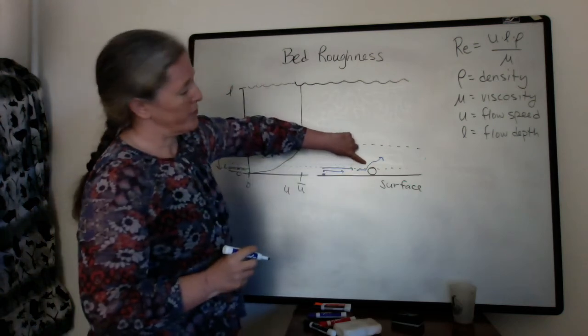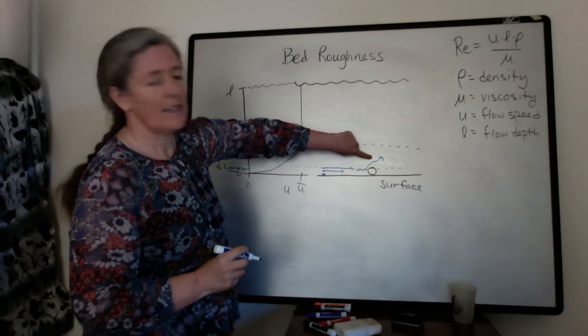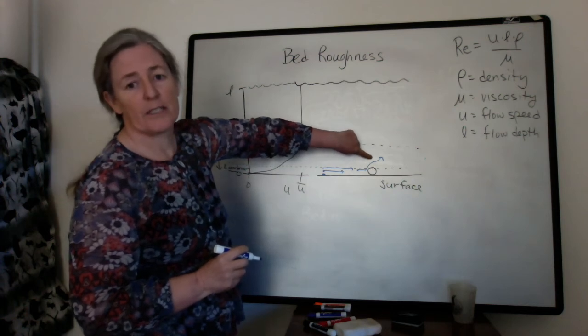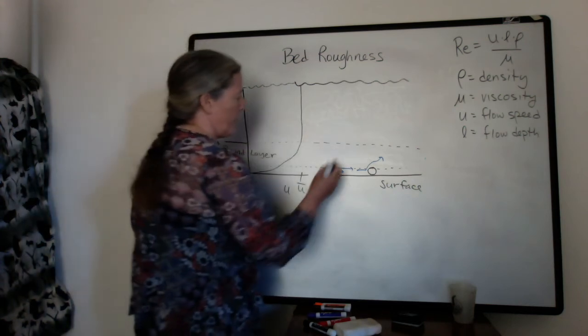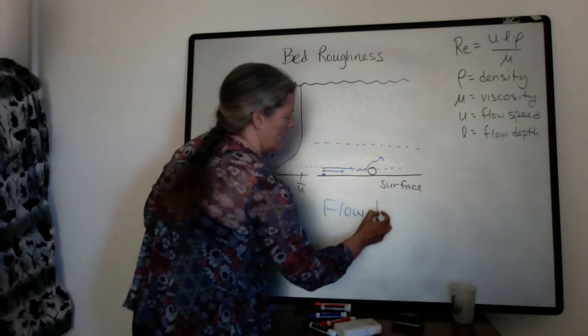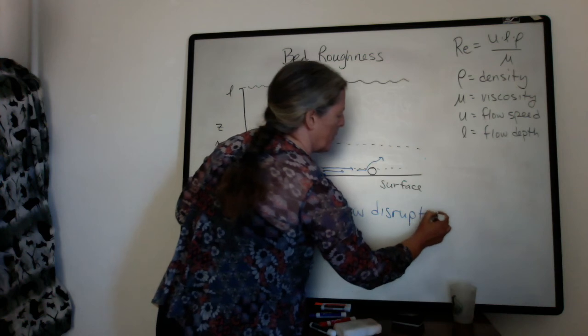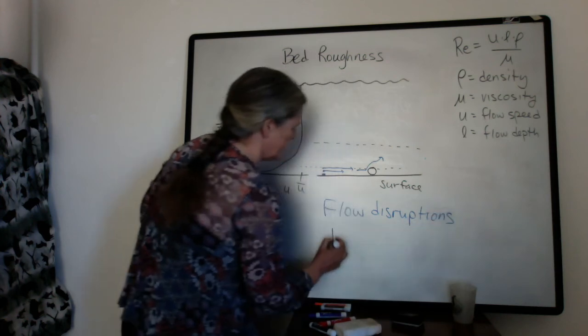So whenever there's something that disrupts the flow, it actually causes an increase in turbulence. So disruptions to the flow increase turbulence.